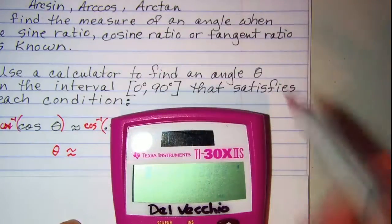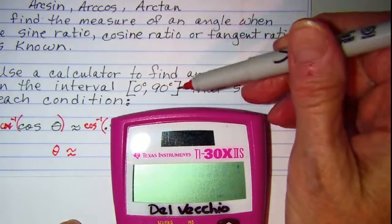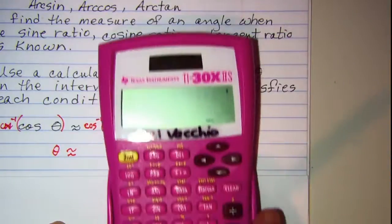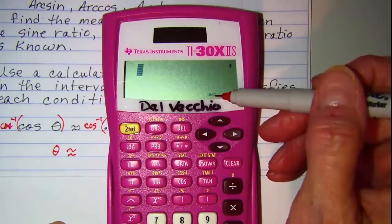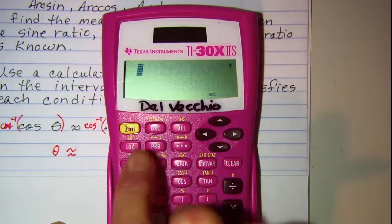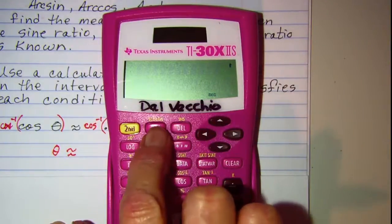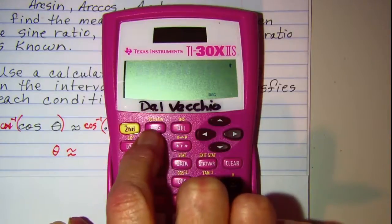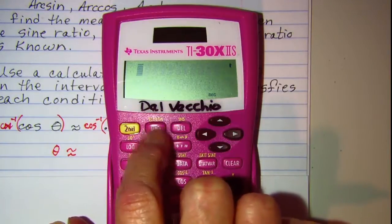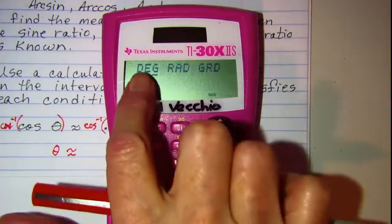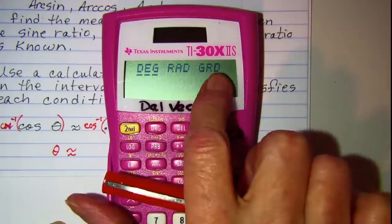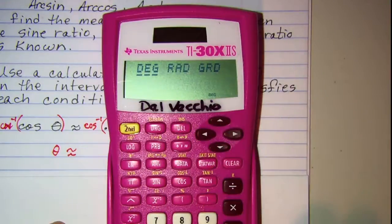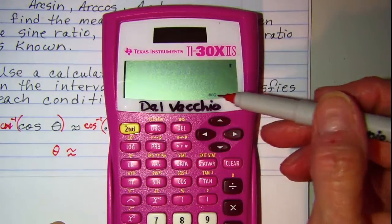Since we're working in degrees, make sure that your calculator shows that it's in degrees. If it's not, you need to either check your mode or in this case, there's a DRG button. When you press that button, you have the option to either go into degrees, radians, or grads. So we want degrees, so we would press ENTER and make sure that it shows degrees there.